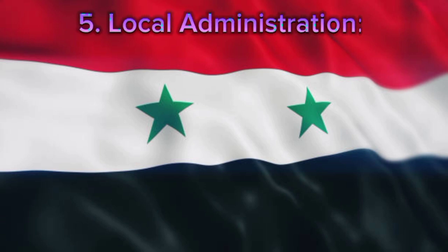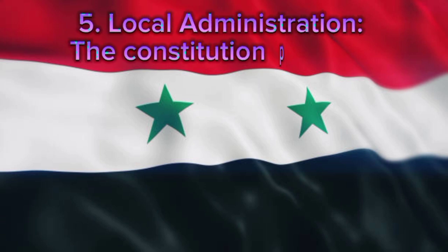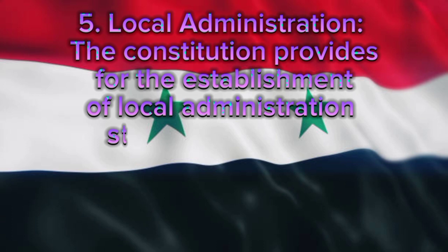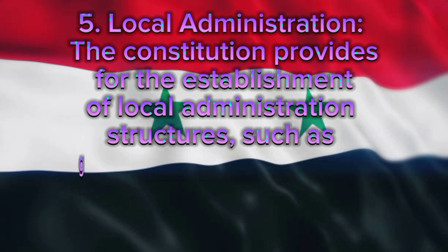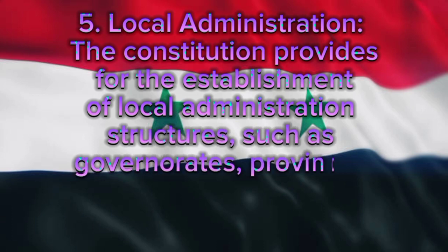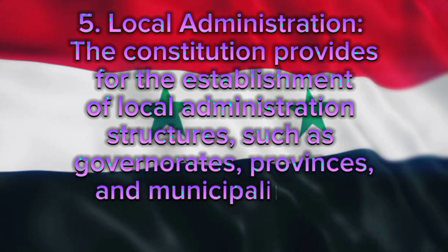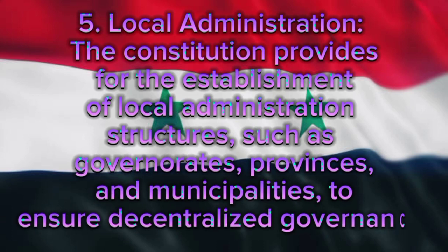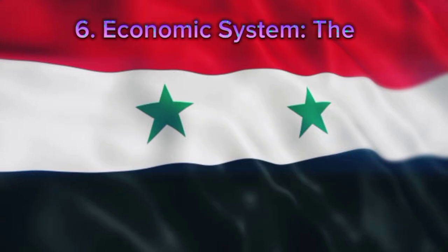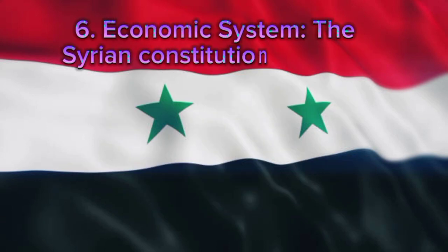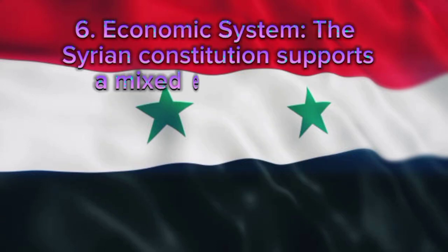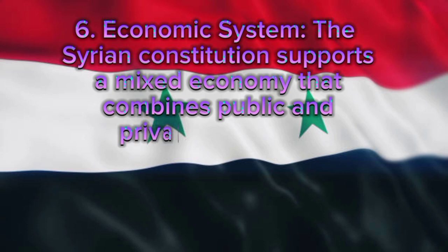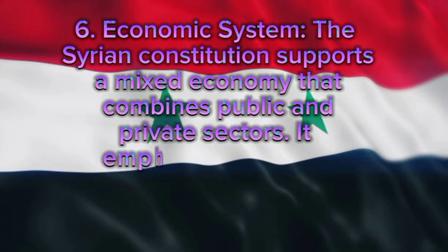Five: Local Administration. The constitution provides for the establishment of local administration structures such as governorates, provinces, and municipalities to ensure decentralized governance. Six: Economic System. The Syrian constitution supports a mixed economy that combines public and private sectors.